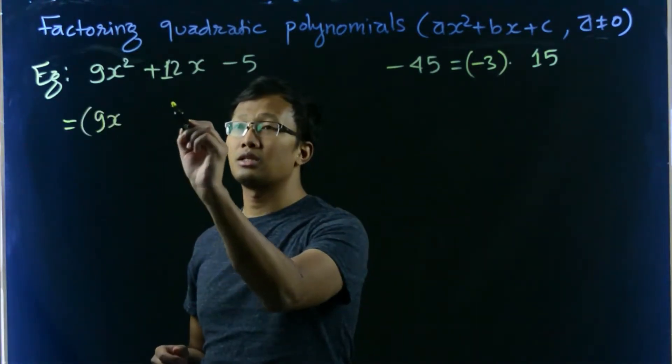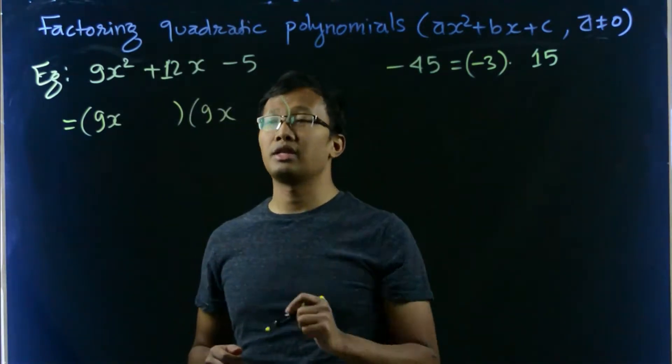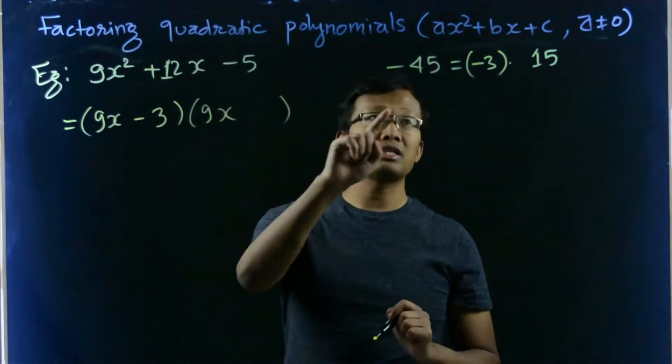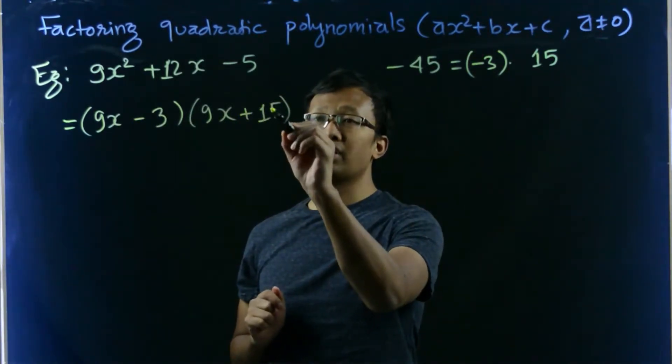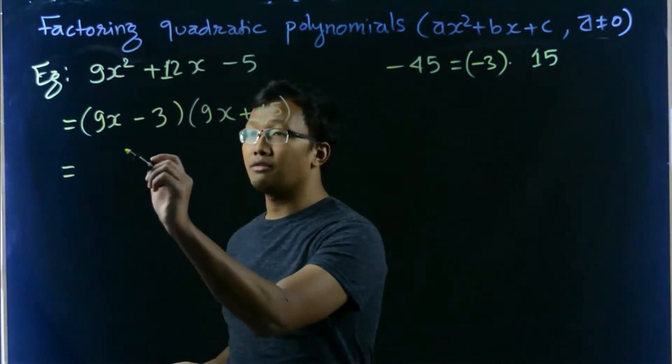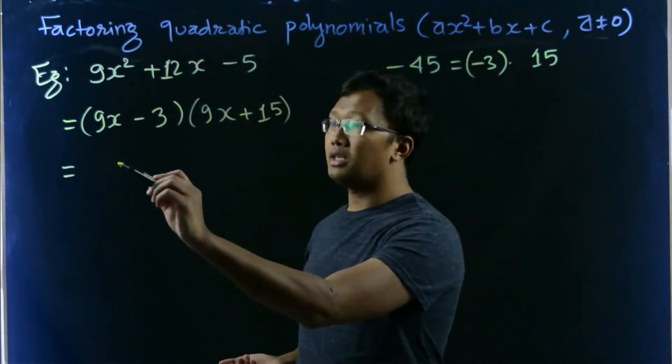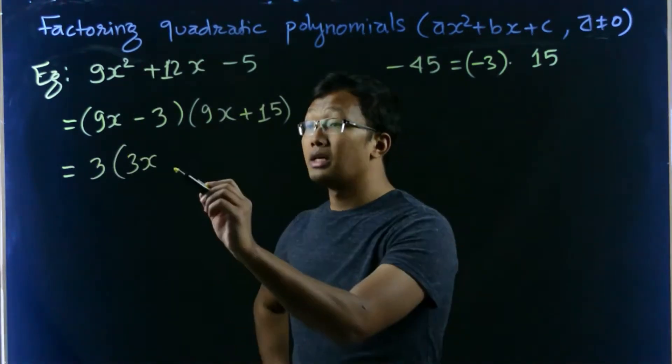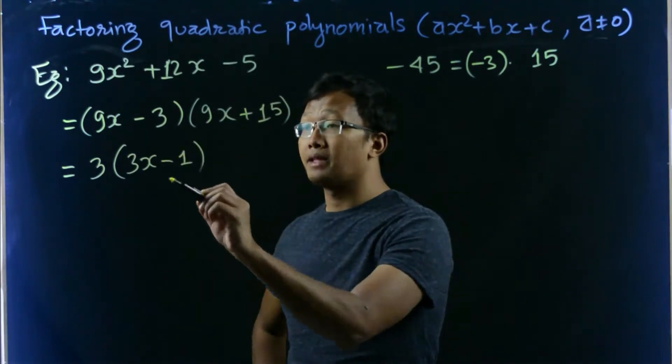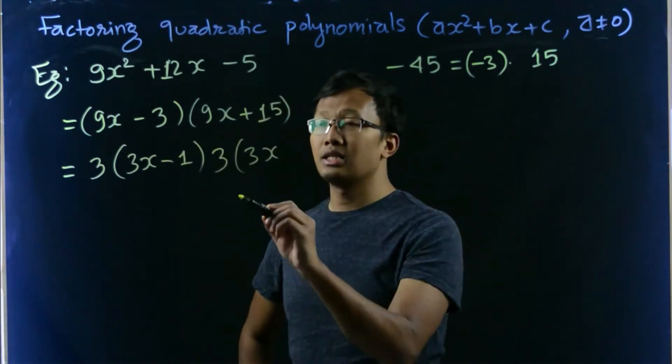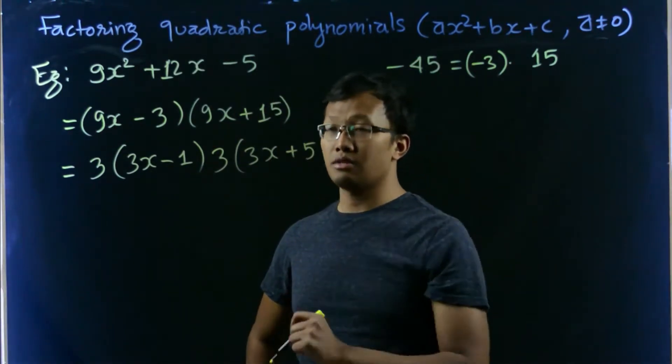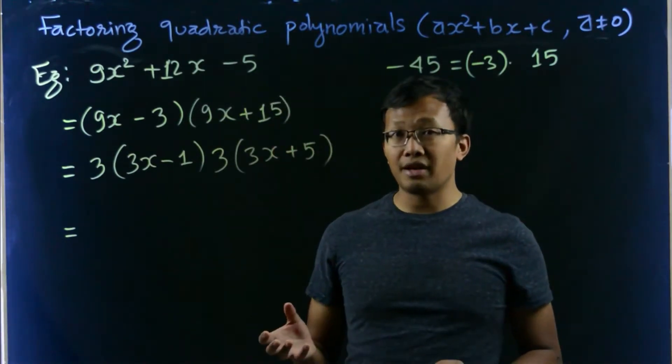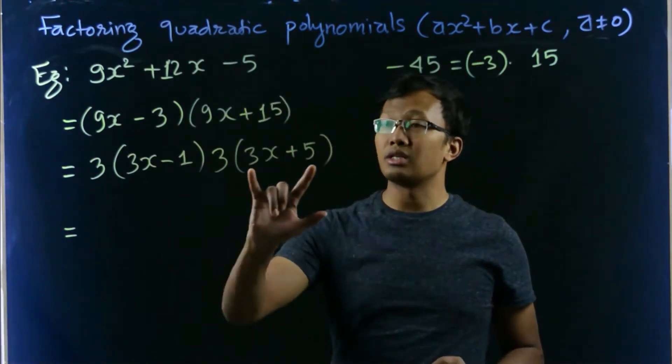So 9x, there are two factors, right? So 9x minus 3, let us write in this way. And similarly, 9x plus 15. Here in the first factor, you can see 3 is common. 3 times 3 is 9, so that's 3x minus 1. 3 times 3x is 9x. 3 times positive 5 is 15.